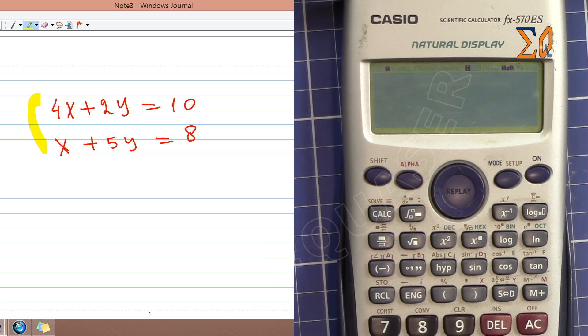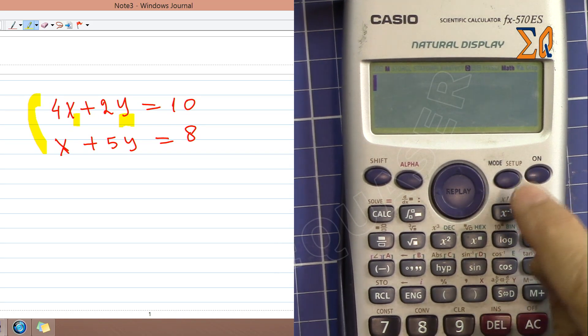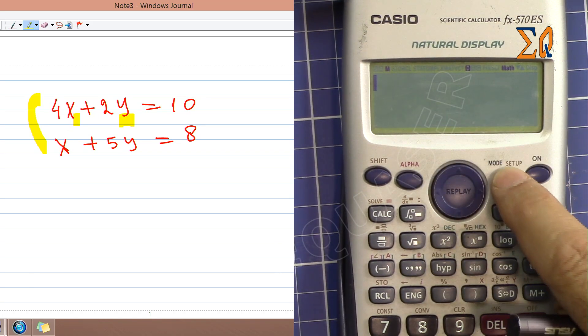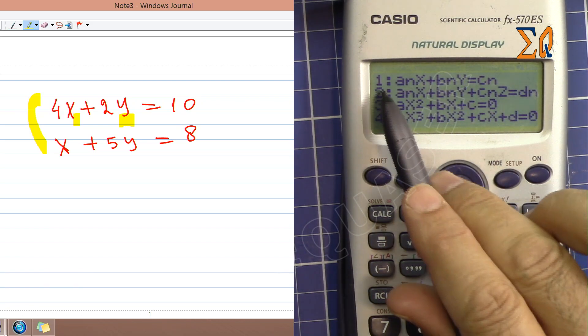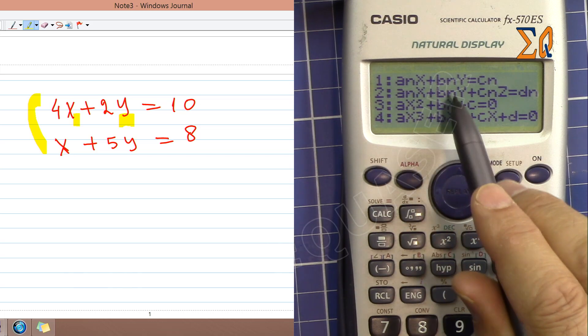To solve for x and y simultaneously, you can use this calculator. I'm in normal mode. I press mode, then number 5 for equation, and then number 1 for ax plus by plus c.